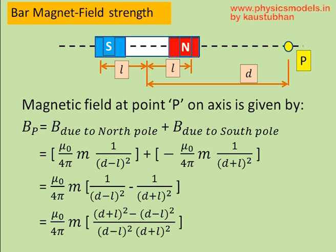We expand them and we get (d+l)² minus (d-l)² divided by (d-l)² into (d+l)². Think of this as being of the form (A+B)² and (A-B)² and mathematics will become easier.